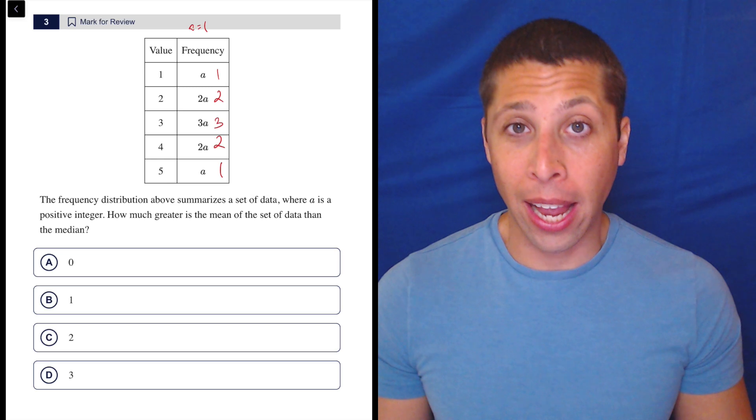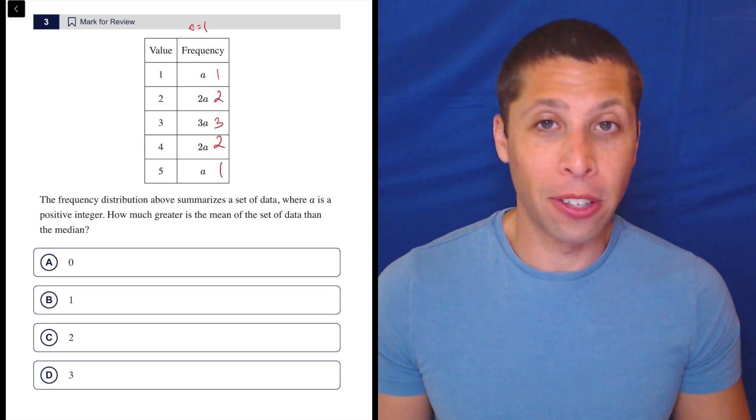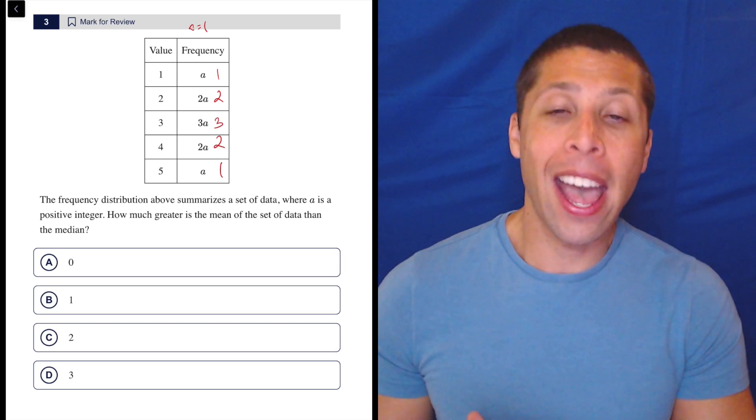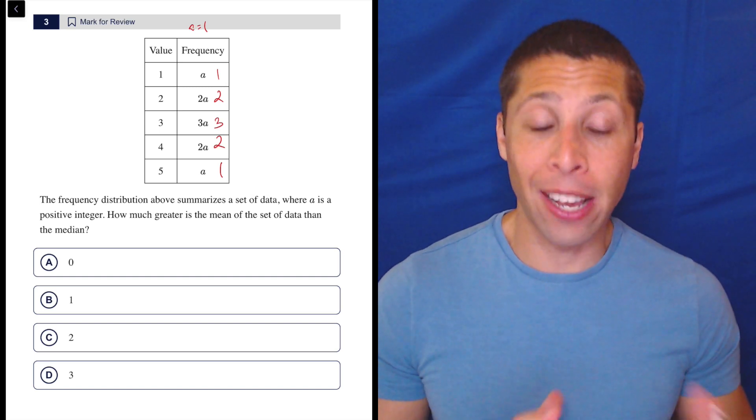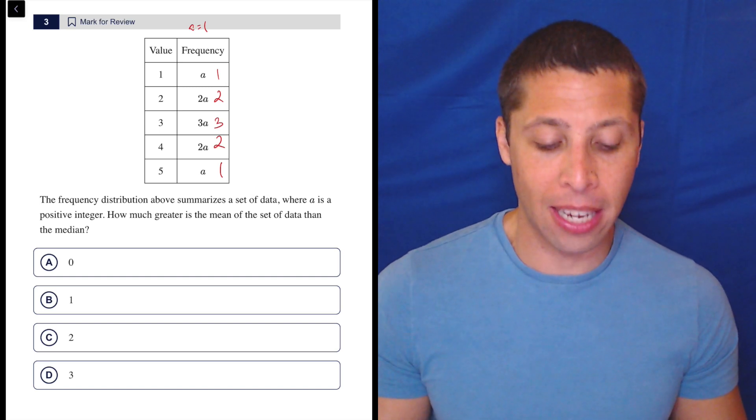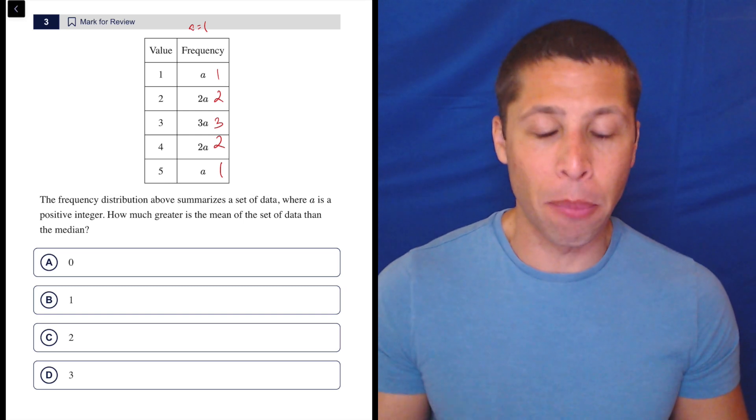Now, we could have picked a different number for A, but why bother? This is just easier because then I don't even really need to rewrite it. But I want to be clear. In my head, I would have been thinking about A as 1 the entire time. I wouldn't have written it out necessarily because it's easy enough for me to see. But I'm thinking of it as a real number, not this hypothetical.